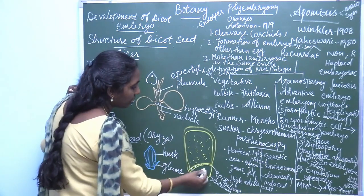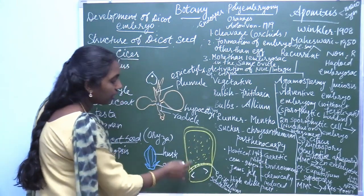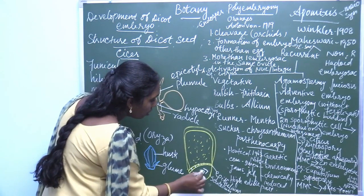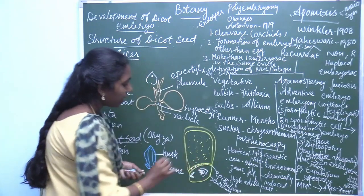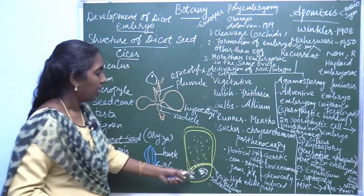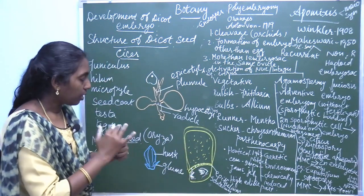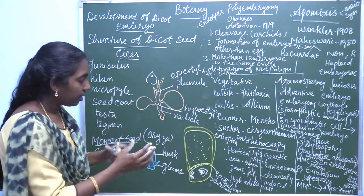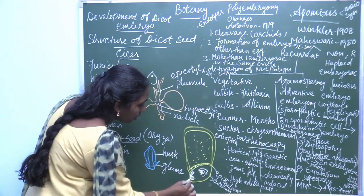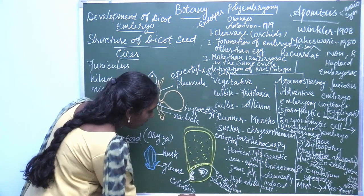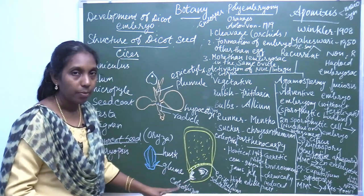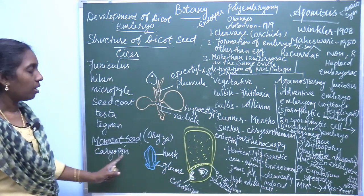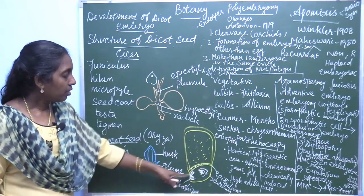The short axis forms the plumule and the radicle. The radicle is covered by the root cap, and the plumule is covered by the coleoptile. The root cap along with the radicle is enclosed by the coleorhiza. So coleoptile and coleorhiza are present in the caryopsis. Two types of seed: dicot seed and monocot seed.